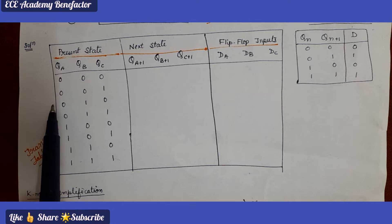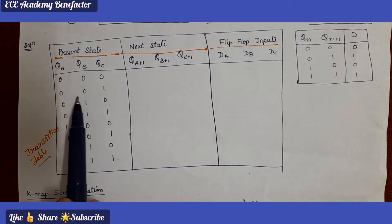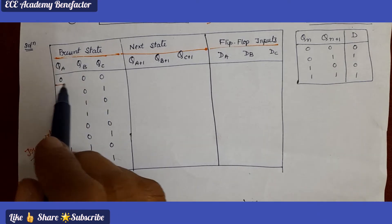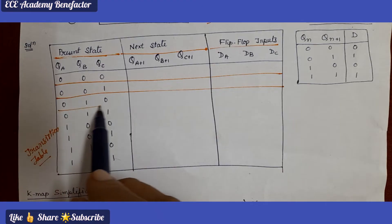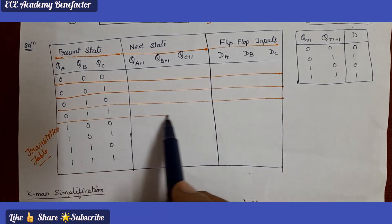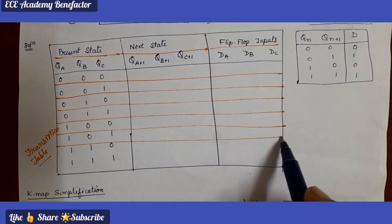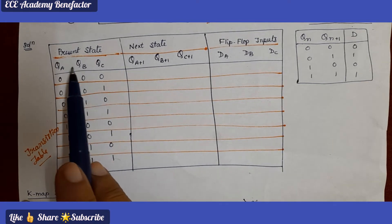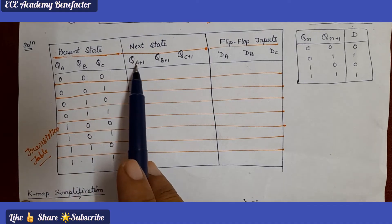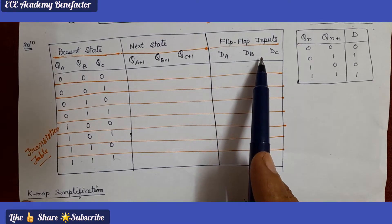The present state combinations are: 000, 001, 010, 011, 100, 101, 110, 111. The flip flop inputs are DA, DB, and DC. After writing the present states from 000 to 111, we need to write the next states by referring to the state diagram.